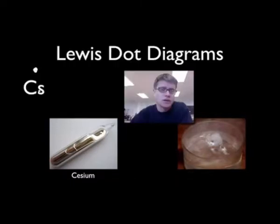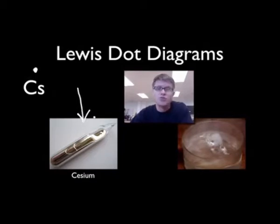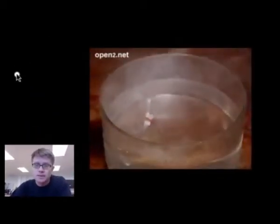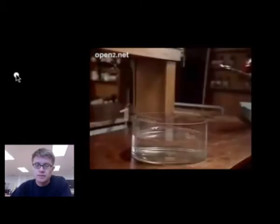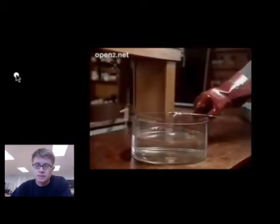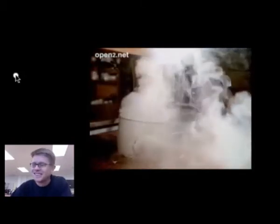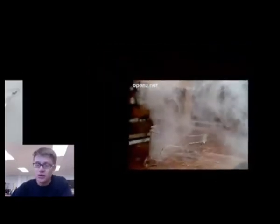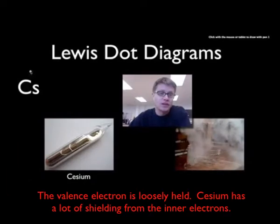So if I had to draw its Lewis dot diagram, it would look like this. You're going to have Cs for the atomic symbol of cesium, then you're going to have one dot, and that represents one valence electron. Now that one valence electron makes it really, really reactive. And so if you mix cesium with water, let's take a look at this video — you get a huge explosion. And the reason you get that huge explosion is due to that one valence electron.